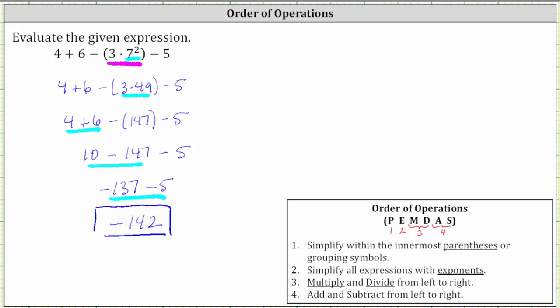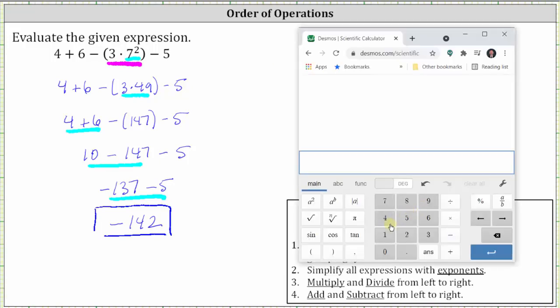And of course we can check this on the calculator by entering the original expression. And let's go ahead and do that. Four plus six minus, and then in parentheses we have three times seven squared, and then minus five. And notice how we do get the same result on the calculator.